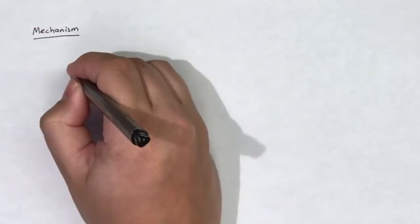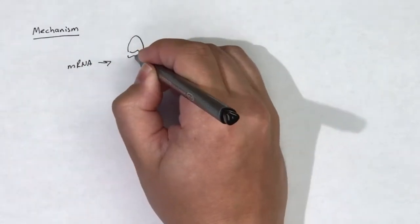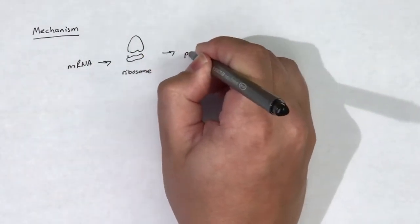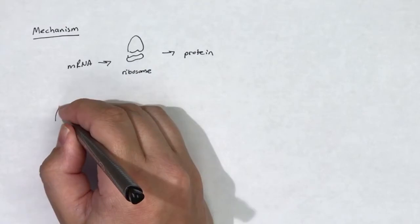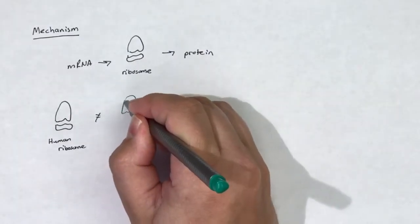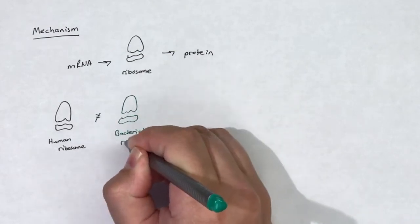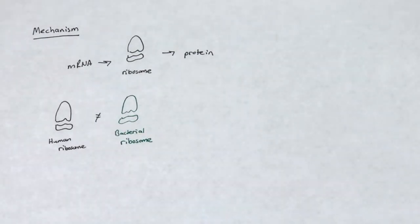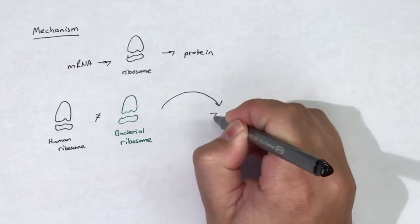Proteins are essential for all cells to function and survive. Ribosomes play an essential role in the translation of mRNA into proteins. Bacterial ribosomes are different than human ribosomes, as they contain different ribosomal subunits. Protein synthesis inhibitors take advantage of this difference.